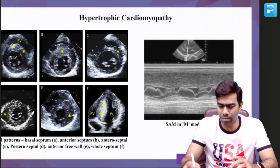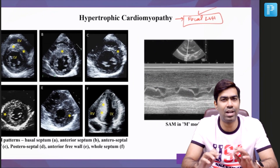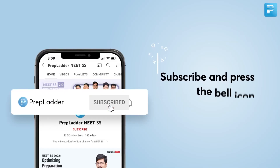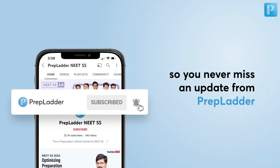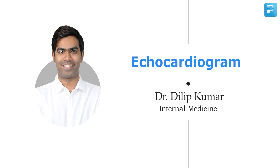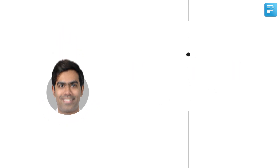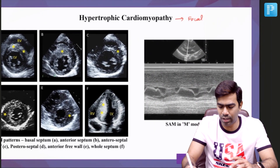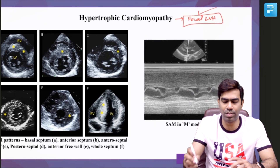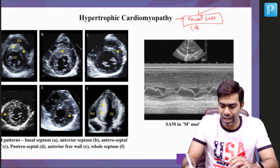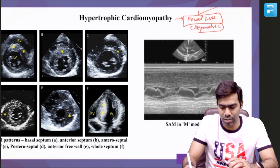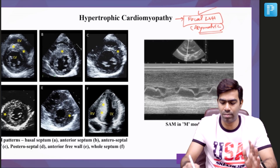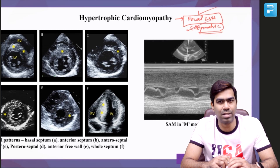Coming to changes in echocardiogram, the most important thing to know is that you will see a focal left ventricular hypertrophy, which is very typical of hypertrophic cardiomyopathy — meaning you will see an asymmetric LVH. Remember, seeing a symmetric or concentric LVH does not rule out HCM, but very often you will see a focal LVH, also called asymmetric LVH.